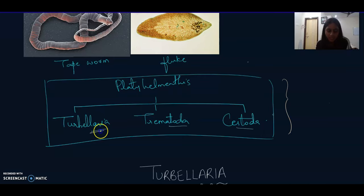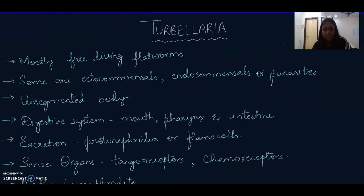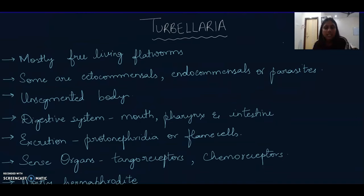The 3 classes are Turbellaria, Trematoda, and Cestoda. I thought all 3 classes would be covered in one video, but the video would have grown too long. So I made this video short, covering only the first class, Turbellaria. In the upcoming 2 videos, we will discuss Trematoda and Cestoda.